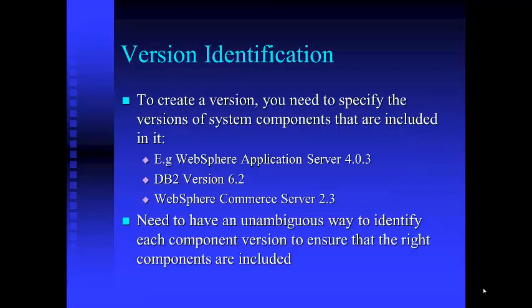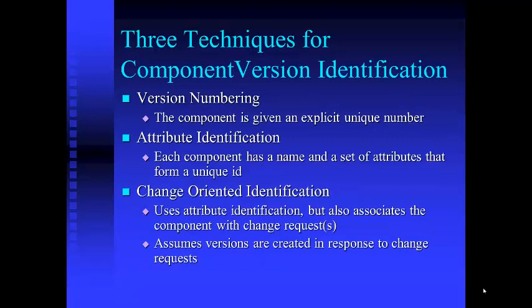To create a version, you need to specify the versions of the system components included in it. For example, a release of WebSphere at IBM might include WebSphere Application Server version 4.03, DB2 version 6.2, and WebSphere Commerce Server 2.3. You need an unambiguous way to identify each component version. There are three techniques: version numbering, where a component is given an explicit unique number; attribute identification, where a name and set of attributes form a unique ID; and change-oriented identification, which associates the component with the change request.